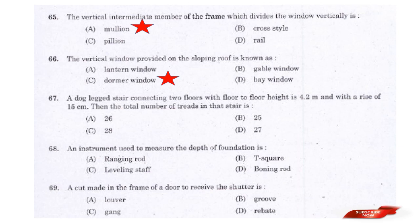Question: A dog-leg stair connecting two floors with floor-to-floor height of 4.2 m and a rise of 15 cm — the total number of treads in that stair is — options: 26, 25, 28, 27. Answer: Option D — 27.